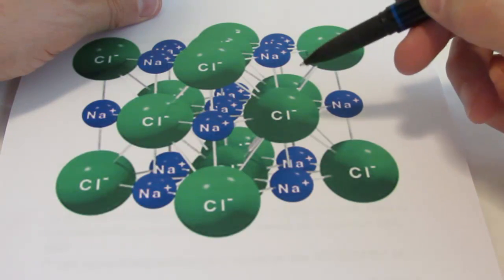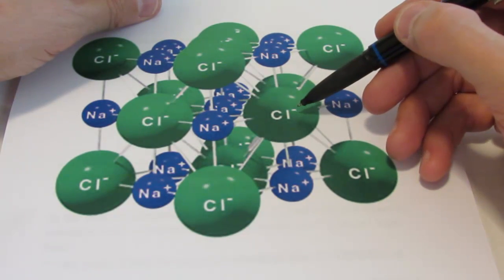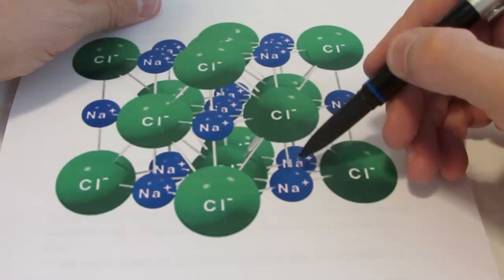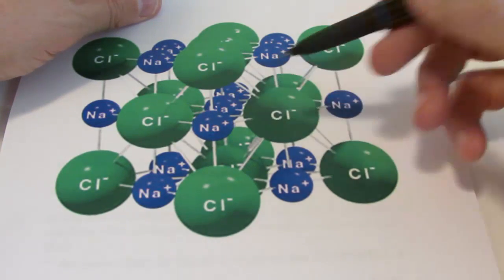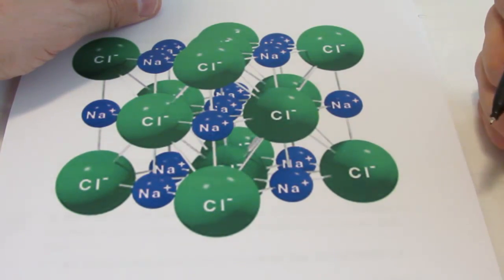Also, if this crystal structure continued in this direction, so it's coming towards you, wouldn't there be another sodium ion here? So that chloride ion is in fact attracted to one, two, three, four, five, and the one you can't see, six sodium ions.